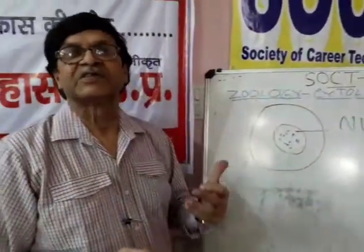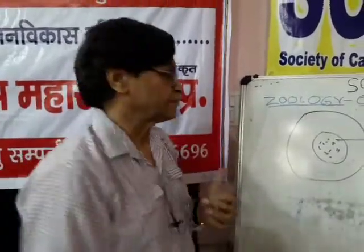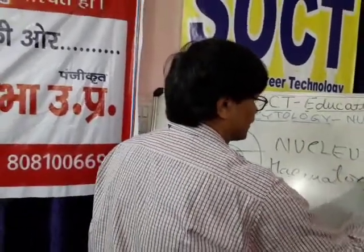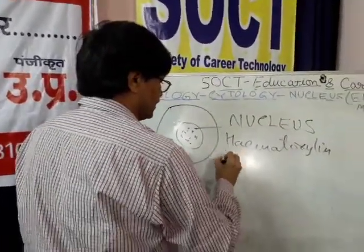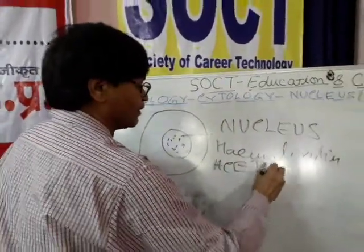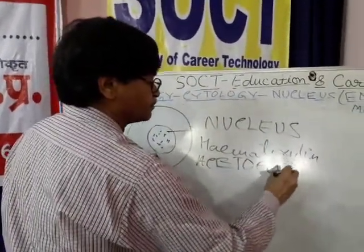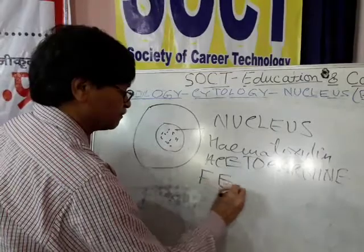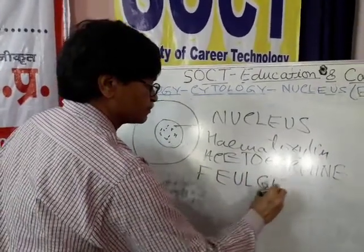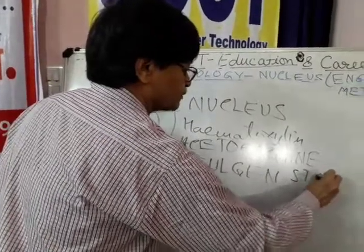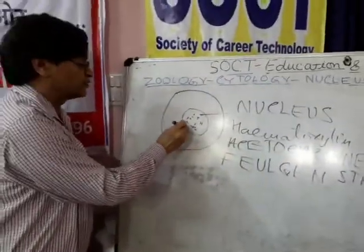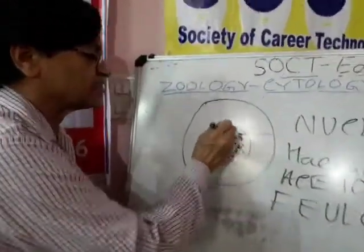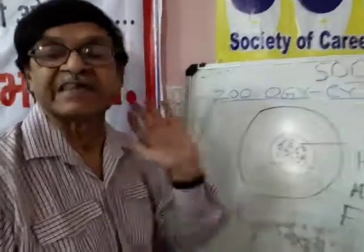Sometimes we can use some stain for it, for example hematoxylin, aceto-carmin, and Feulgen stain. Then the nucleus becomes still much more darker, so it becomes easier to discriminate between the nucleus and cytoplasm.